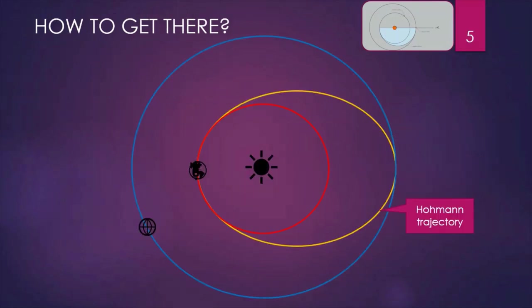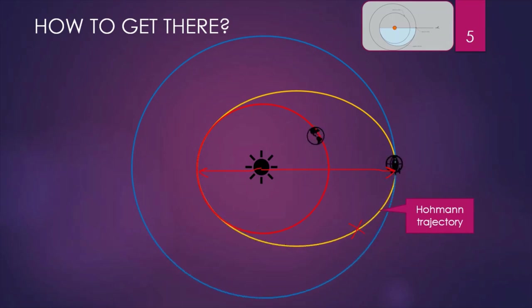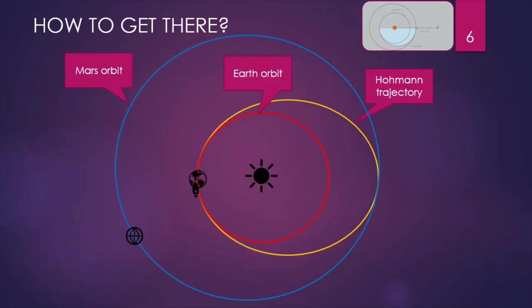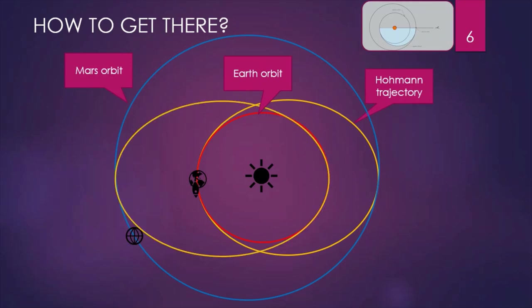To make it simple, let's assume that the Earth and Mars have both circular orbits. This is the Hohmann trajectory — the yellow one. It's an ellipse having its perihelion close to the Earth orbit and the aphelion close to the Mars orbit. This is an animation of a transfer between the two planets. The Hohmann transfer is also the longest one. But we know that our orbits are not circular, and they are even off-center, so there are existing different possibilities.